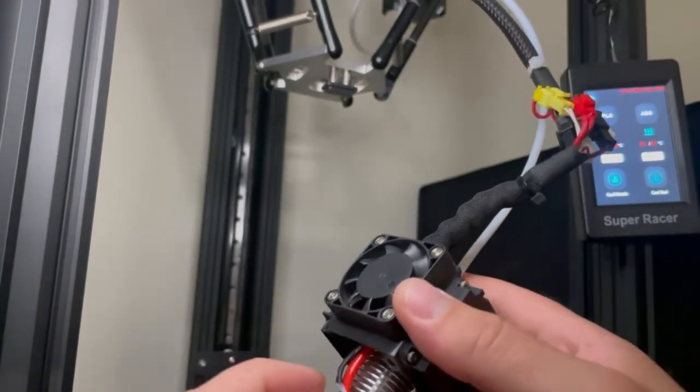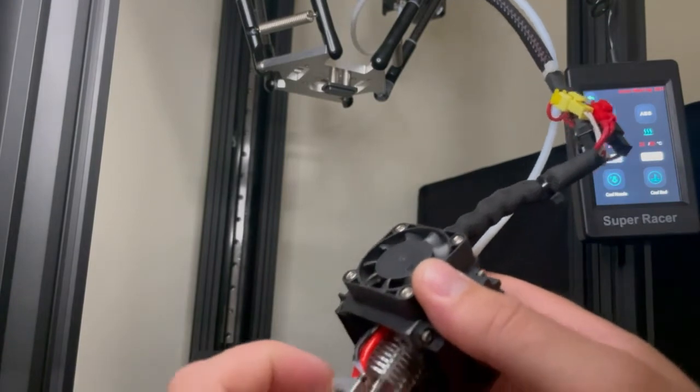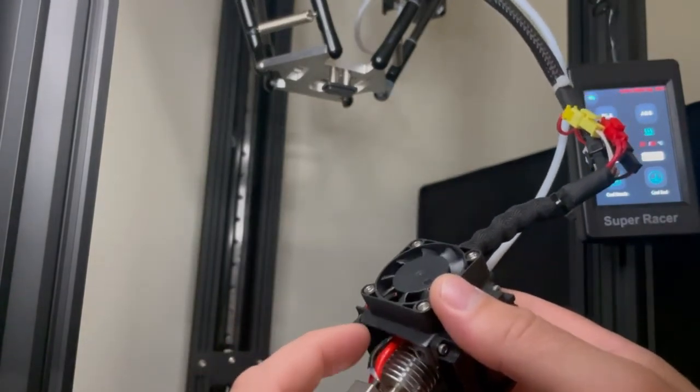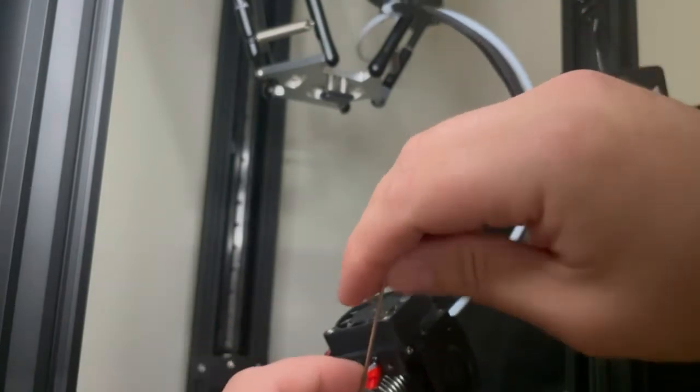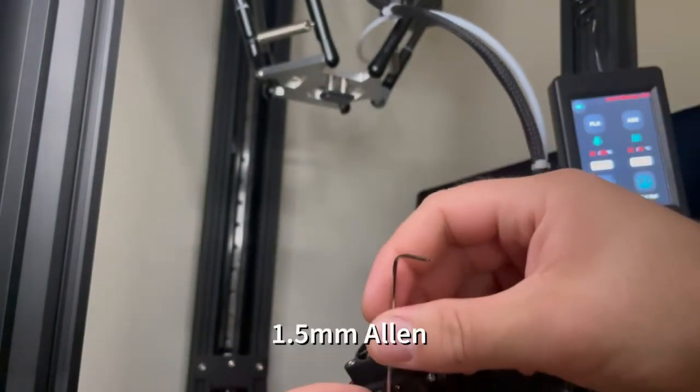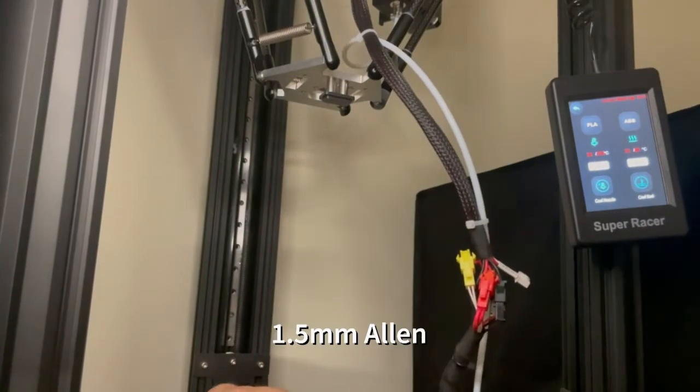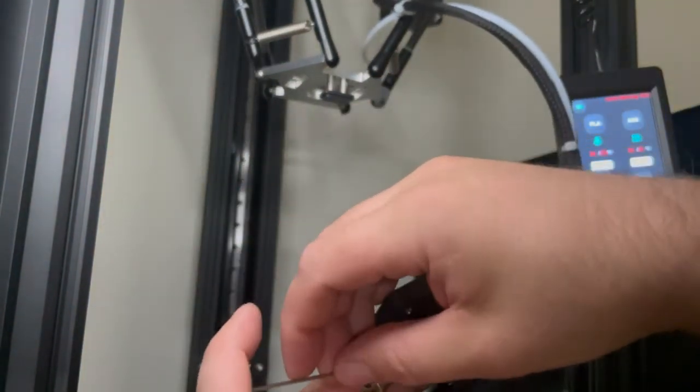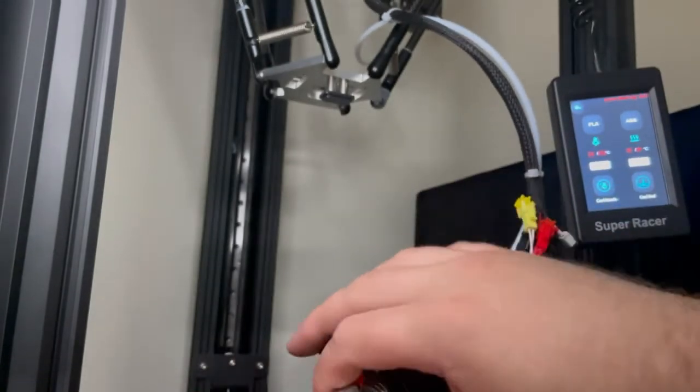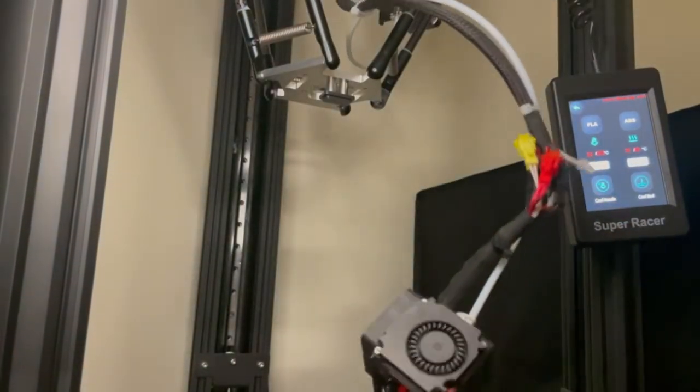From looking at it, it looks like I can probably loosen this Allen set screw here and slide out the temperature sensor. Okay, I took it all the way out. And I'm just going to push on the sensor from this side. Looks like it's fused with a bit of plastic there.